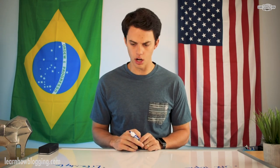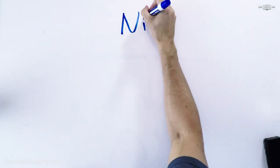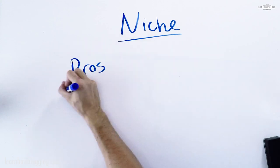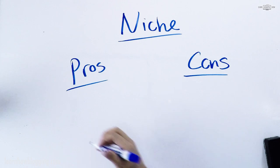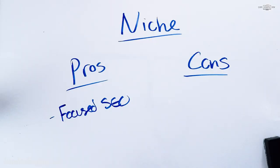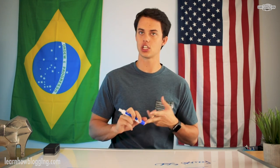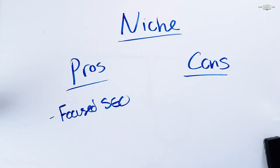Let me talk about some pros and cons of each type of blogging. A very big pro with niche blogging is that you're very focused for SEO. Google loves niche websites — if you have a website focused on a niche topic, Google views that as high authority. They want to see a one-stop shop that has information about everything in a specific topic, where people come and stay for a long time diving deep into the details.